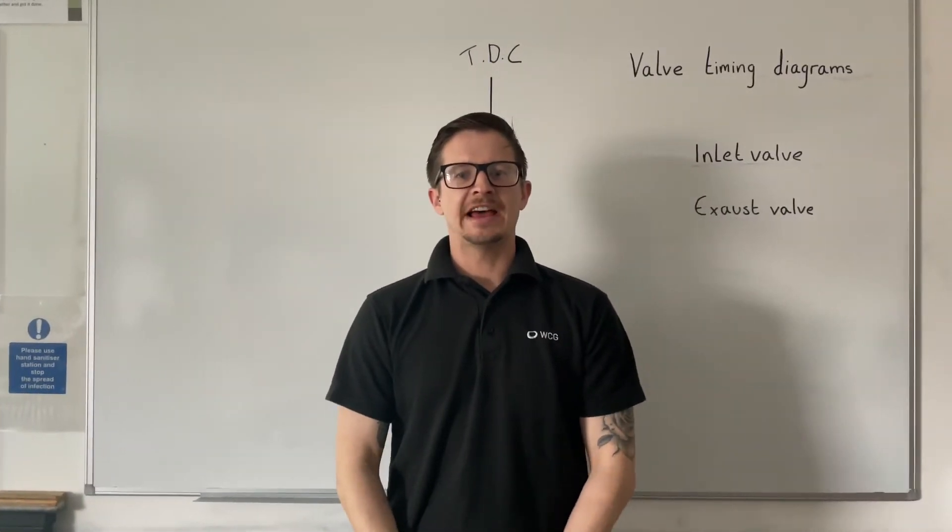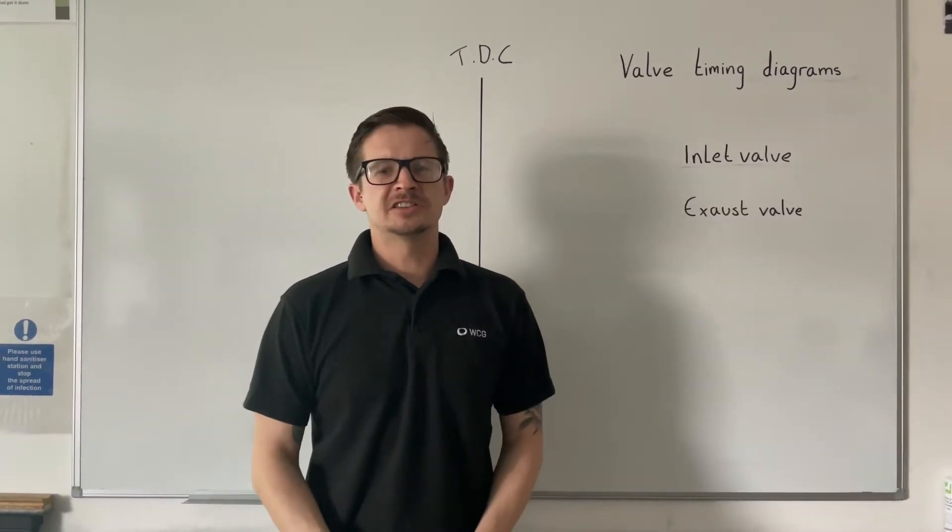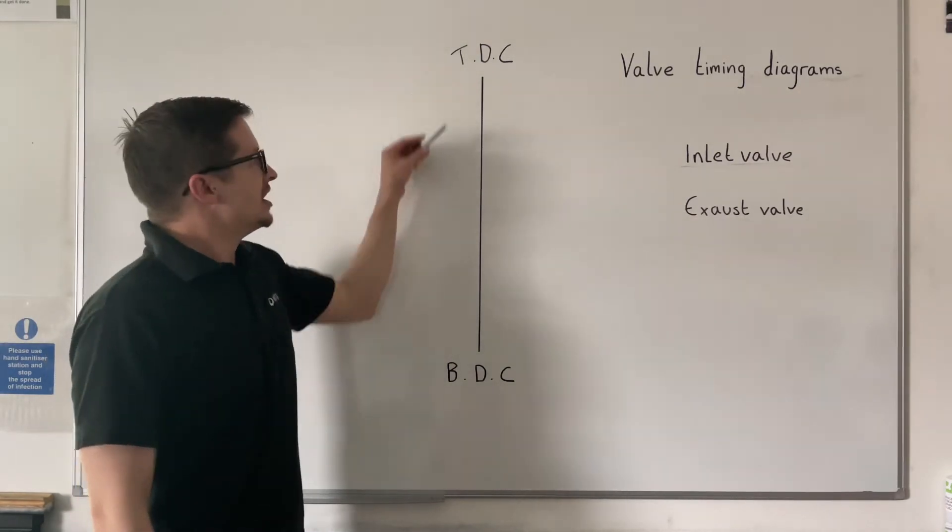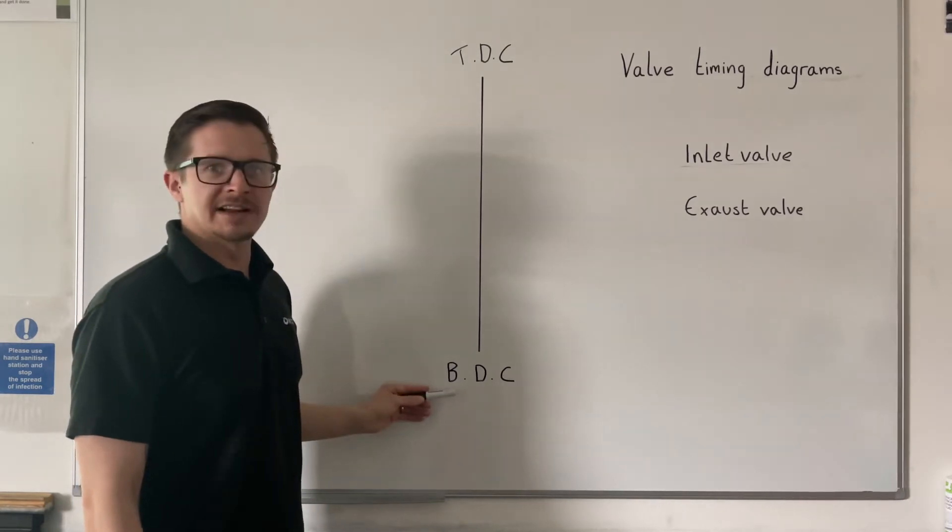This video is to learn how to read a valve timing diagram on a four-cylinder engine. To start with, you've got a line vertically down the middle. It represents the stroke of the piston in the engine. You've got top dead centre and you've got bottom dead centre.